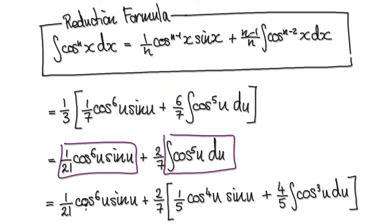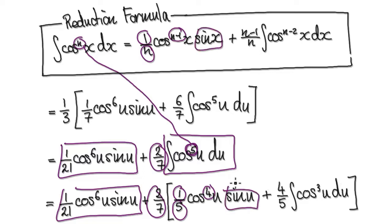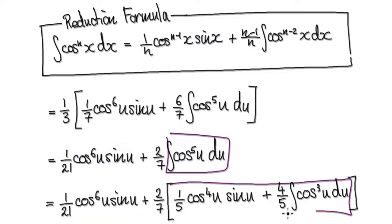So this whole block here stays the same. And then you've got your 2 over 7. Using the reduction formula, this time n would be 5. So using the reduction formula, it would be 1 over 5, and then 5 take away 1, that would be 4. The sign stays the same, and then it would be 5 take away 1, that would be 4, this would be 5, and then this thing here gets minus by 2, that would be 5 take away 2, which would be 3.